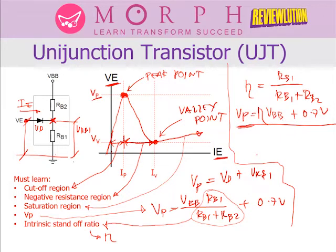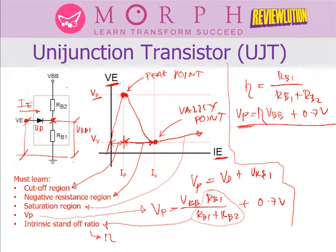To turn off the UJT, simply apply a negative pulse at the emitter — that will trigger the UJT to turn off. The most common application of the UJT is as a relaxation oscillator because of its characteristic behavior. That topic is beyond the scope of our current discussion, so you may read about it in the recommended books.